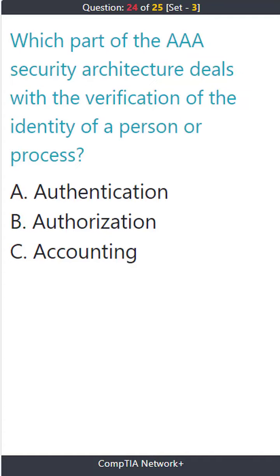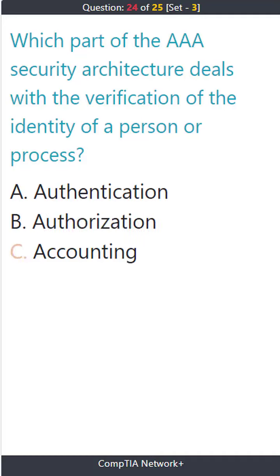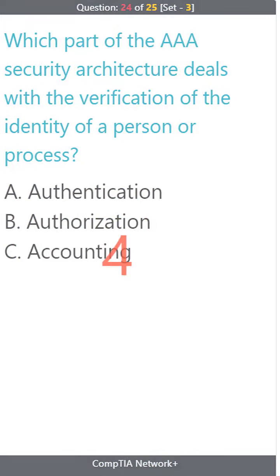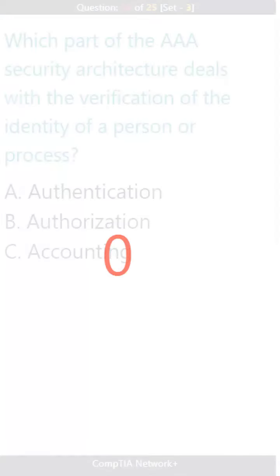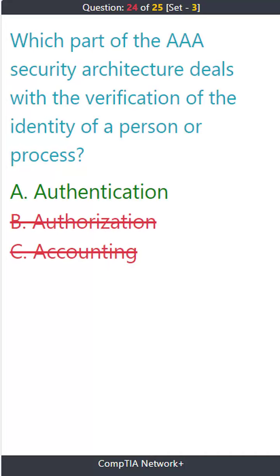Question 24. Which part of the AAA security architecture deals with the verification of the identity of a person or process? A. Authentication. B. Authorization. C. Accounting. The correct answer is A. Authentication.